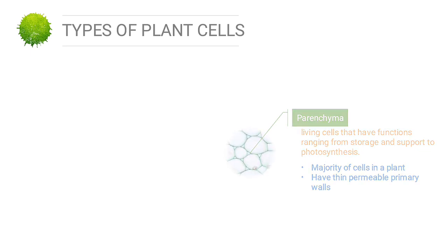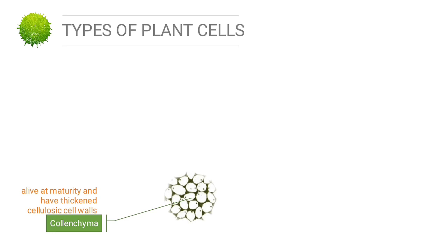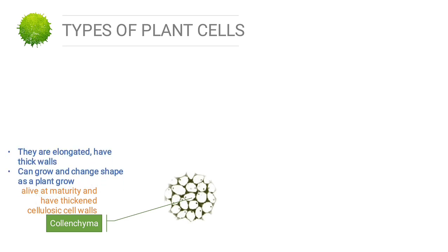The next type of plant cell is collenchyme. Collenchyme cells are alive at maturity and have thick cellulose cell walls. They are typically quite elongated and may divide transversely to give a shifted appearance. They have thick cell walls and can grow and change shape as a plant grows.